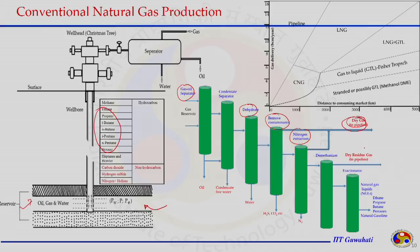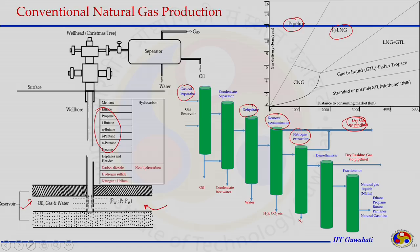After processing, the transportation sector comes into play. The quantity and distance of transport determine the form of transportation — for long distances with significant quantities, either pipeline or LNG (liquefied natural gas) may be chosen depending on terrain and distance. Gas-to-liquid (GTL) and LNG will be discussed in detail during the course.